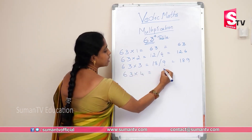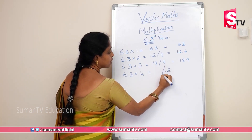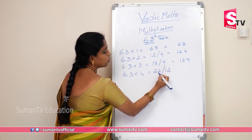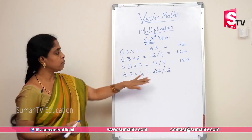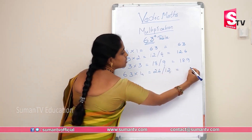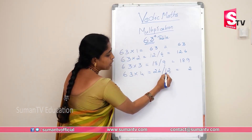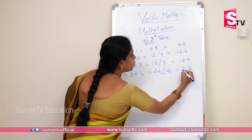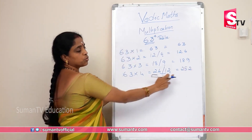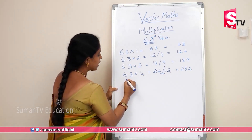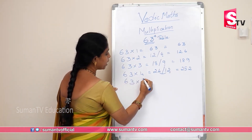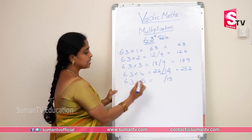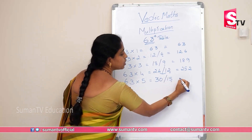63 × 4: four sixes are 24, three fours are 12. Write the 2, carry 1. Result is 252. 63 × 5: five sixes are 30, five threes are 15. Add 30 plus 1 that is 31. So 63 × 5 is 315.